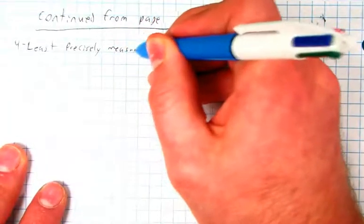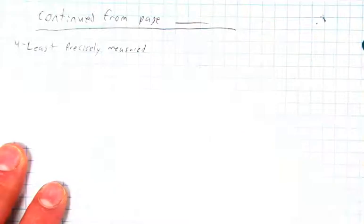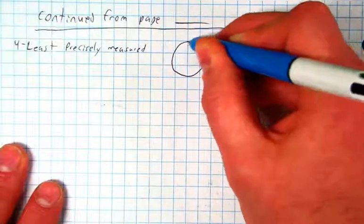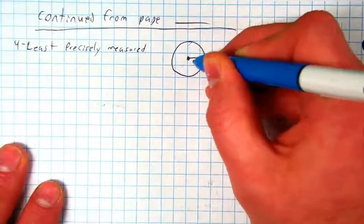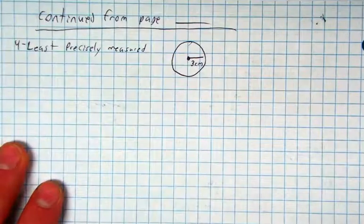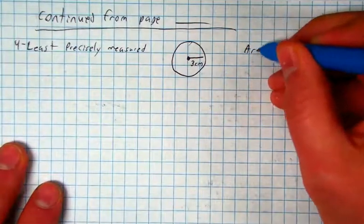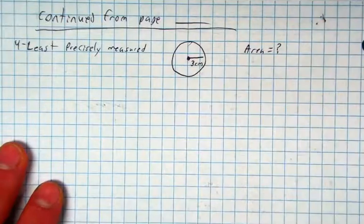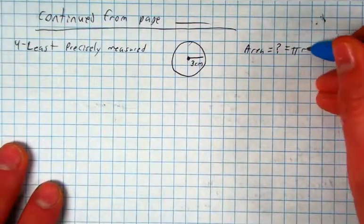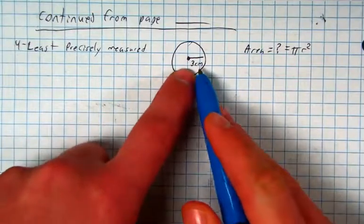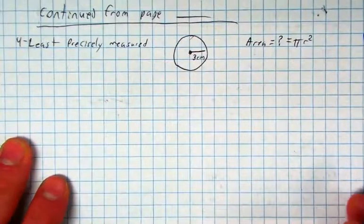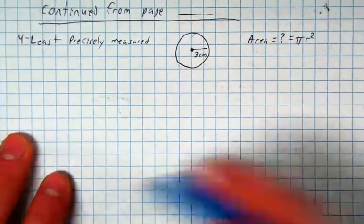The least precisely measured values. So let's say we have a circle with a radius of three centimeters. And I say, well, what is the area? Well, you might say, well, it's just pi r squared. And I know that that's three centimeters, but here's the deal. In math, they tell you this all the time. This isn't really true in the real world. It's only true in theory.